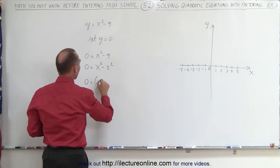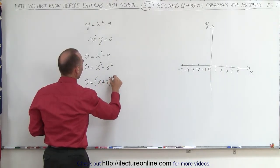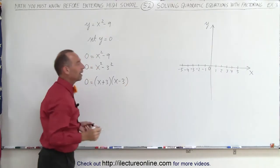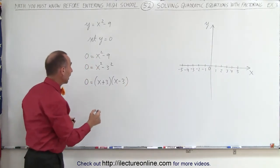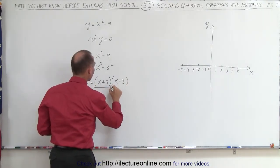So, we're going to do that by factoring the right side, and notice that it's the difference between two squares. This can be written as 0 equals x squared minus 3 squared.